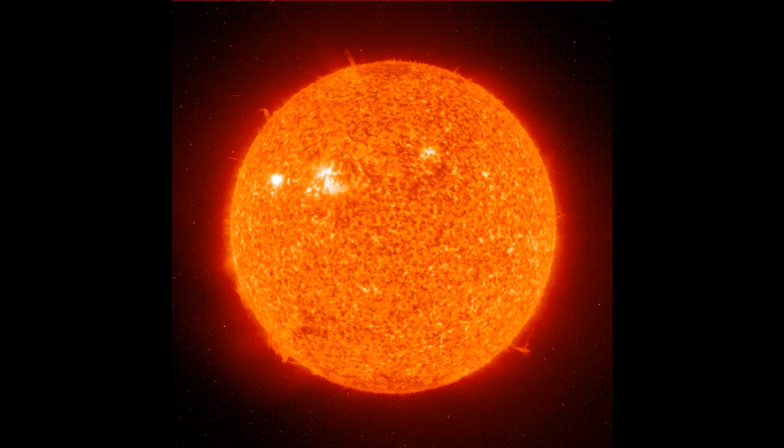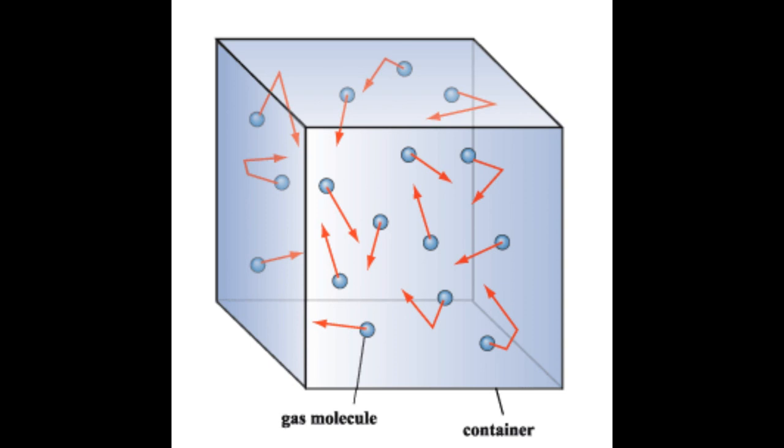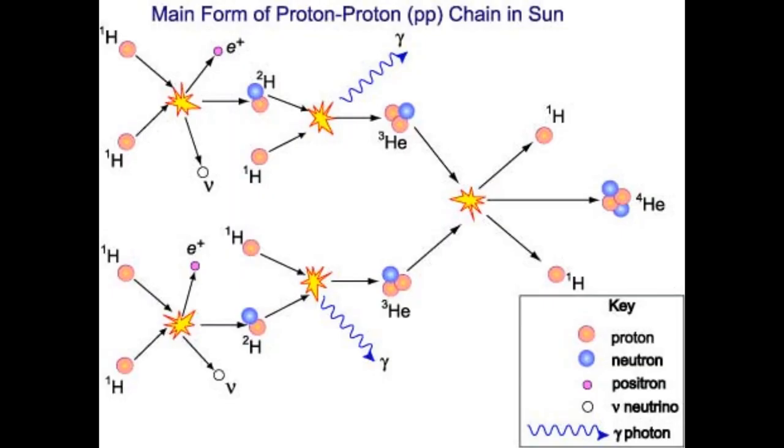A star is a ball of gas in hydrostatic equilibrium. Hydrostatic equilibrium means that at every point in the star, the force due to gravity, which points towards the center of the star, exactly balances the force due to pressure, which points directly away from the center. The pressure comes from the random thermal motions of the gas atoms and is proportional to the temperature of the gas. For there to be a net pressure force to balance gravity, the pressure must be highest at the center and decrease towards the surface. For the pressure to be highest at the center, the temperature has to be highest at the center, and this requires a source of thermal energy at the center of the star.